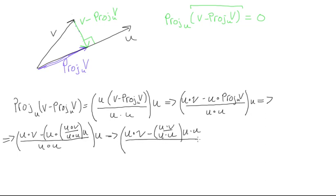And it's also still multiplied by u. So then we can keep going with this further, and we can notice that here there's a u dot u and here there's u dot u, and those are going to cancel each other out.